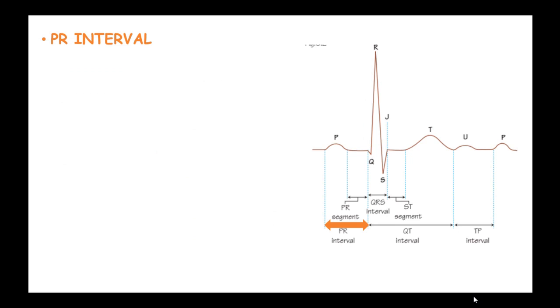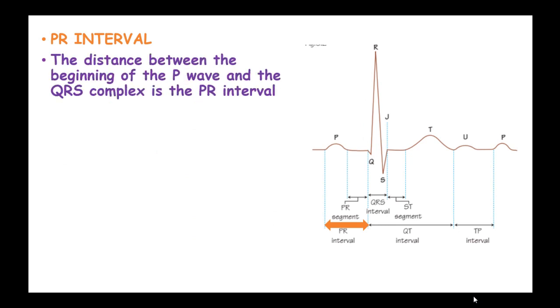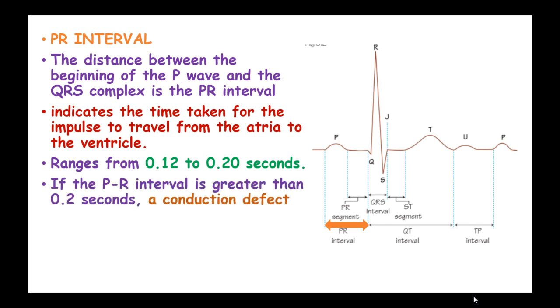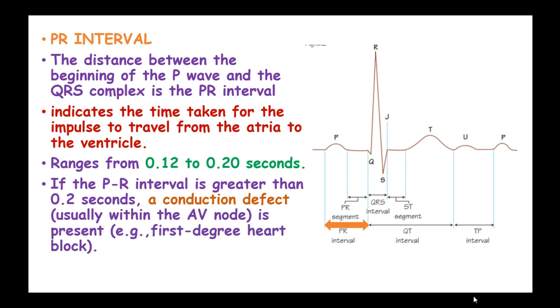P-R interval. The distance between the beginning of the P-wave and the QRS complex is known as the P-R interval. And this P-R interval indicates the time taken for the impulse to travel from the atria to the ventricle. The time ranges from 0.12 to 0.2 seconds. If the P-R interval is greater than 0.2 seconds, a conduction defect usually with the atrioventricular node is present, such as the first-degree heart block.